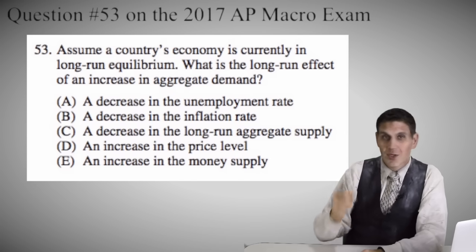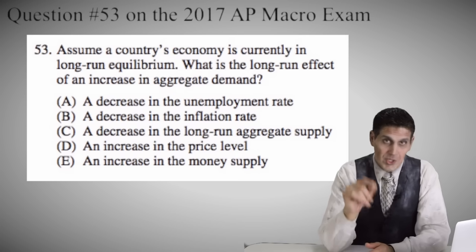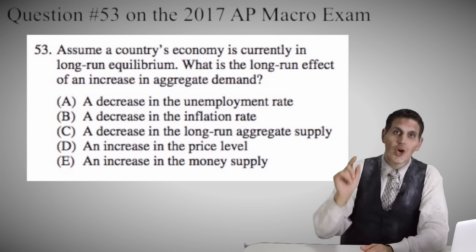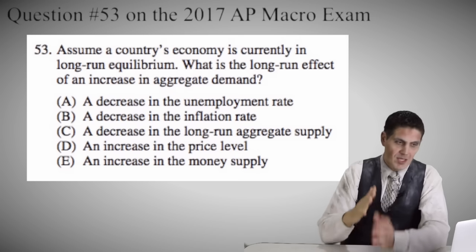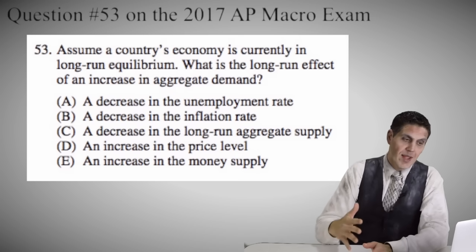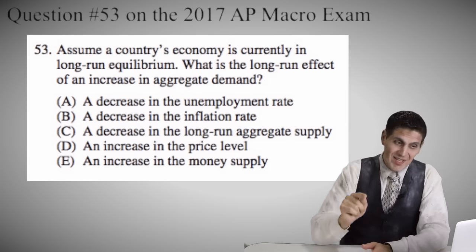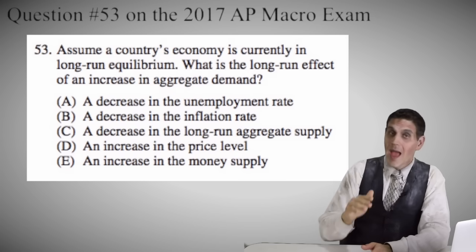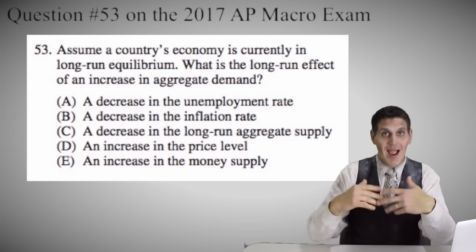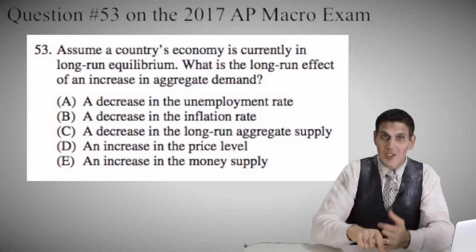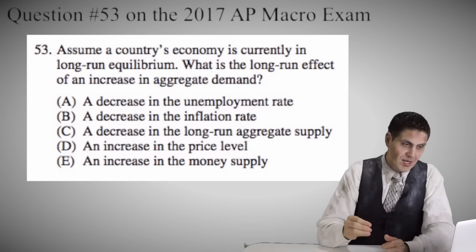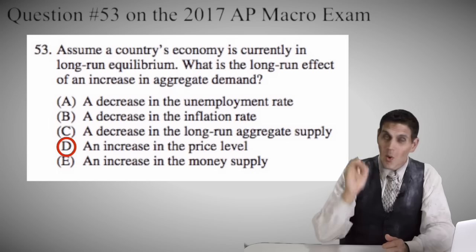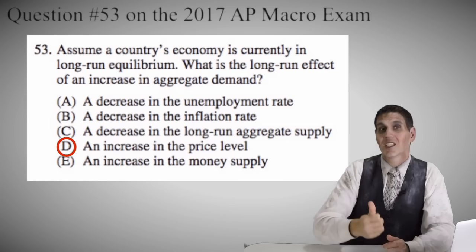Right here is question 53 on the 2017 AP macro multiple choice test — go ahead and answer this by yourself. Notice that A could be right if this was the short run: if an economy is in the long run and there's an increased aggregate demand, the unemployment rate would decrease — that's correct — but it specifically tells you that this is the long run. So aggregate demand goes up, that leads to higher prices and higher price level, which leads to higher wages and resource costs, so aggregate supply will shift to the left, putting us back at full employment. The right answer is D — an increase in price level — that's the only thing that would for sure happen given this very specific question.